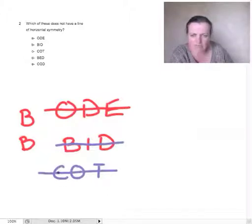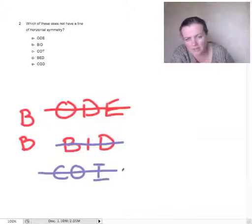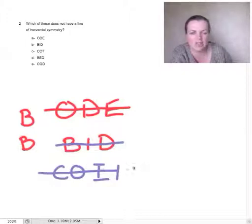That reflects top and bottom - those would work - but this one wouldn't, would it? You'd have to either have a thing on the leg or have it like that. So COT does not have horizontal symmetry. So I reckon it's COT.